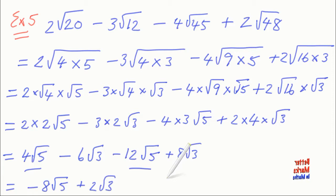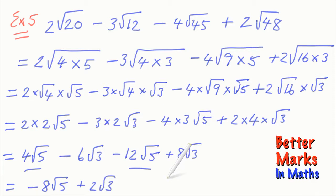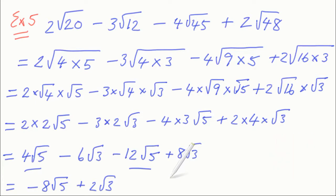There's a lot of working out in this type of sum, and you can shortcut a couple of steps. But the key thing is: when you don't start with like surds, you have to simplify them using your list of perfect squares. And that's about it for this lesson on how to add and subtract surds — I'll see you in the next one.